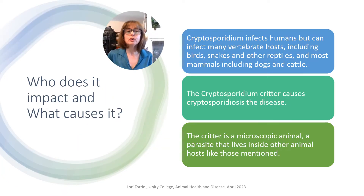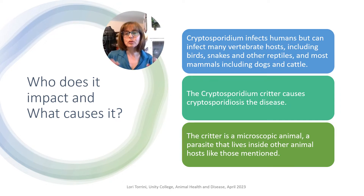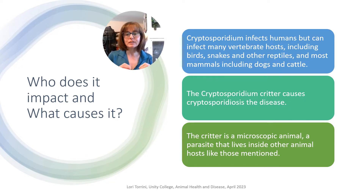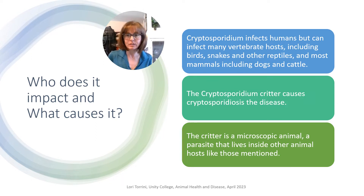What does it impact, or who does it impact, and what causes it? Crypto infects humans, but it can also infect many vertebrate species. Hosts include birds, snakes, and other reptiles, and most mammals, including dogs and cattle. The cryptosporidium parasite causes cryptosporidiosis, and this microscopic parasite lives inside other animals that we call hosts — reptiles, mammals, including humans and our dogs, which we like to hike with and sometimes take swimming and to other recreational water activities.